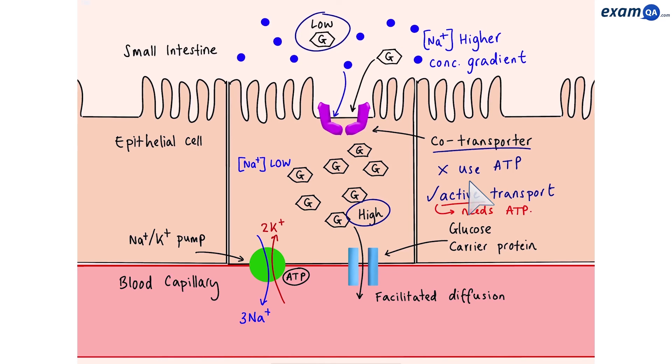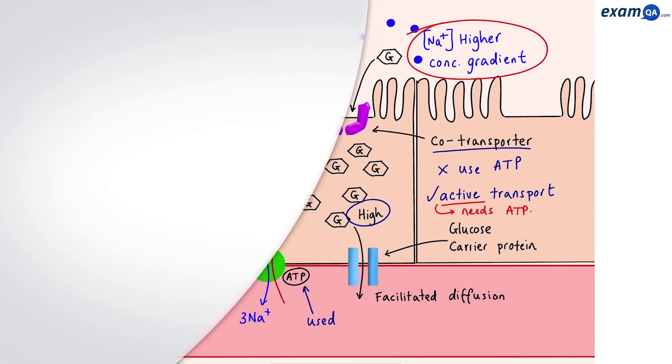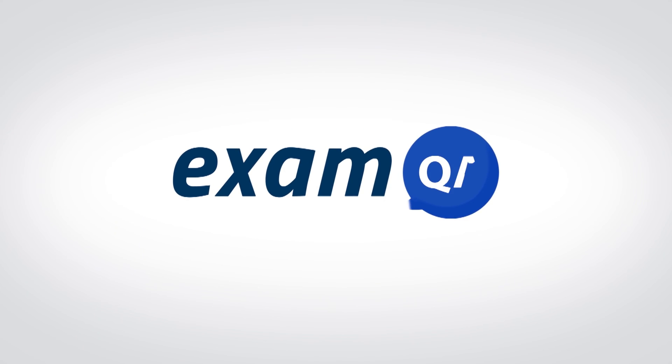However, we know active transport requires ATP. So where was the energy used? Right here. ATP was used to create the concentration gradient. Without which sodium ions and therefore glucose molecules will not have been able to transfer into the cell.